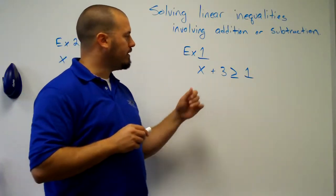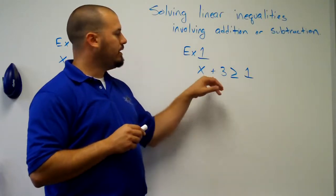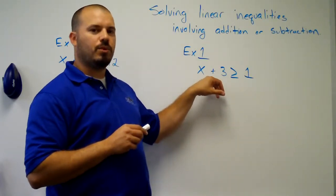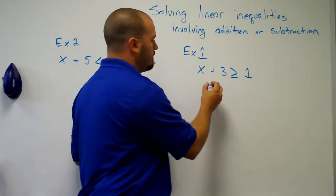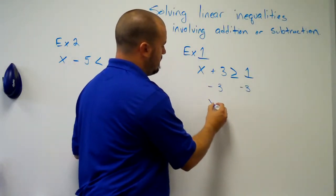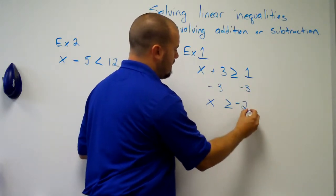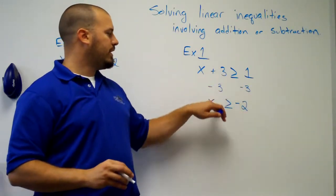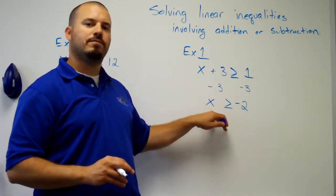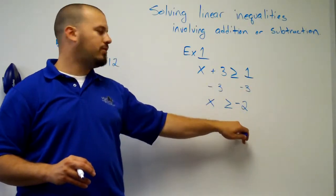So, to solve this equation, x plus 3 is greater than or equal to 1, I would need to subtract 3 from both sides of this inequality. When 3's cancel out, you have x on the left. 1 minus 3 is negative 2.